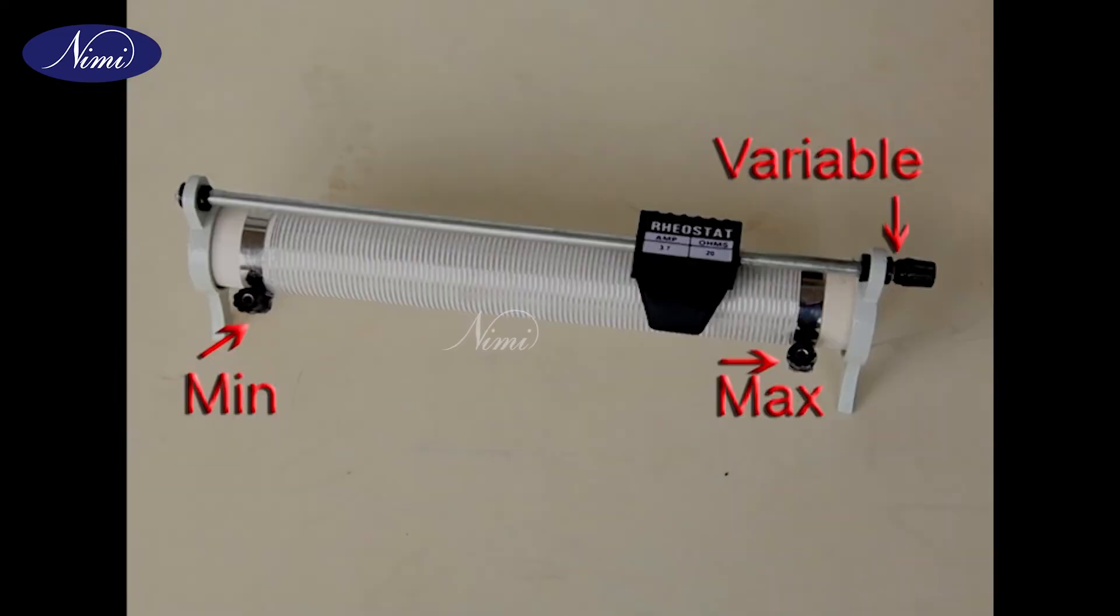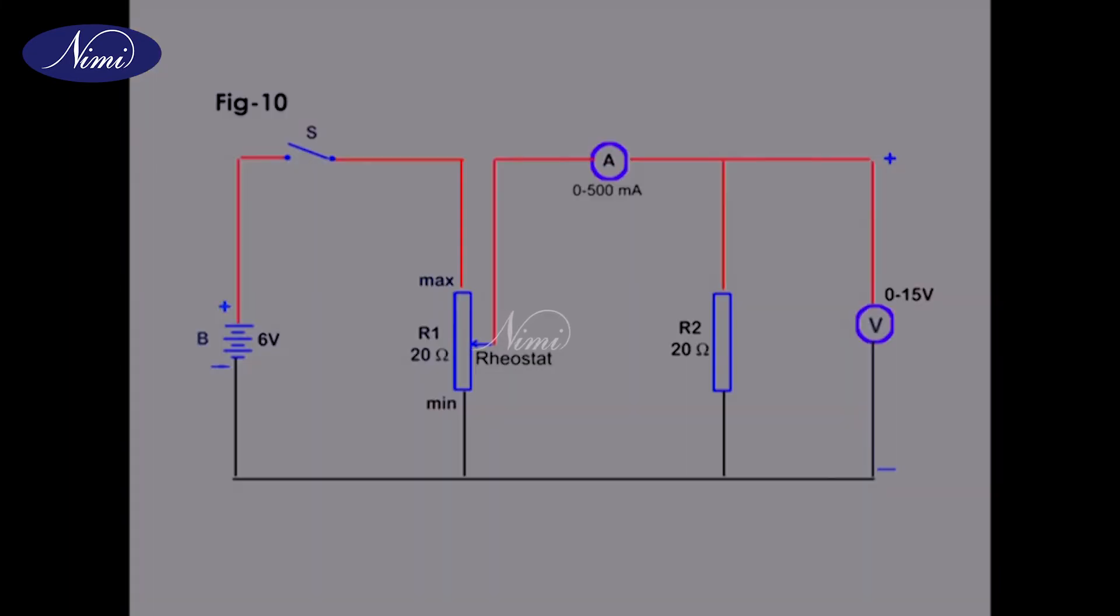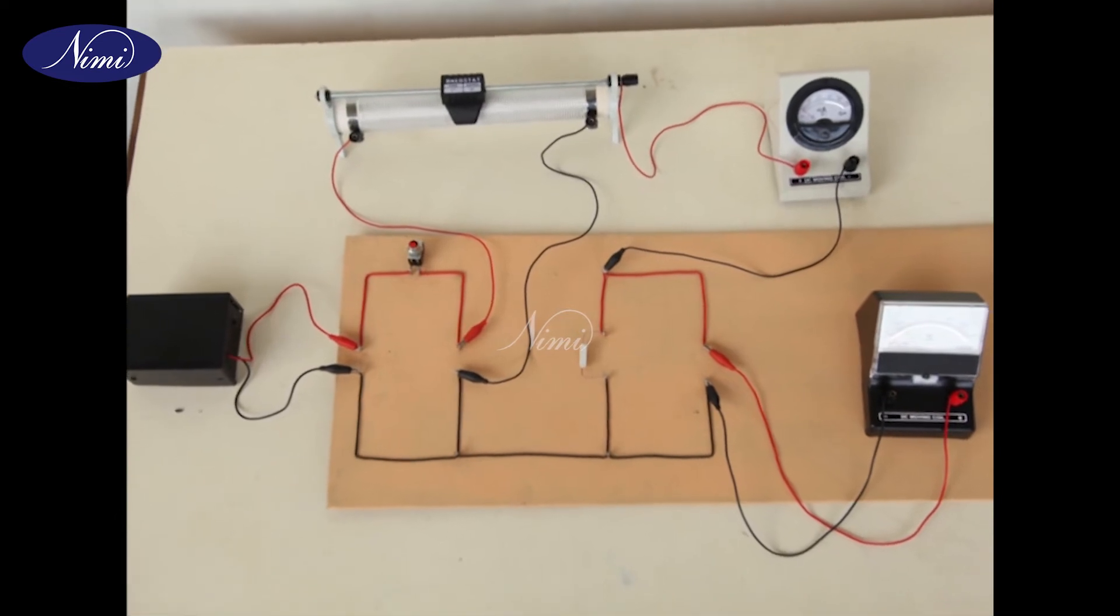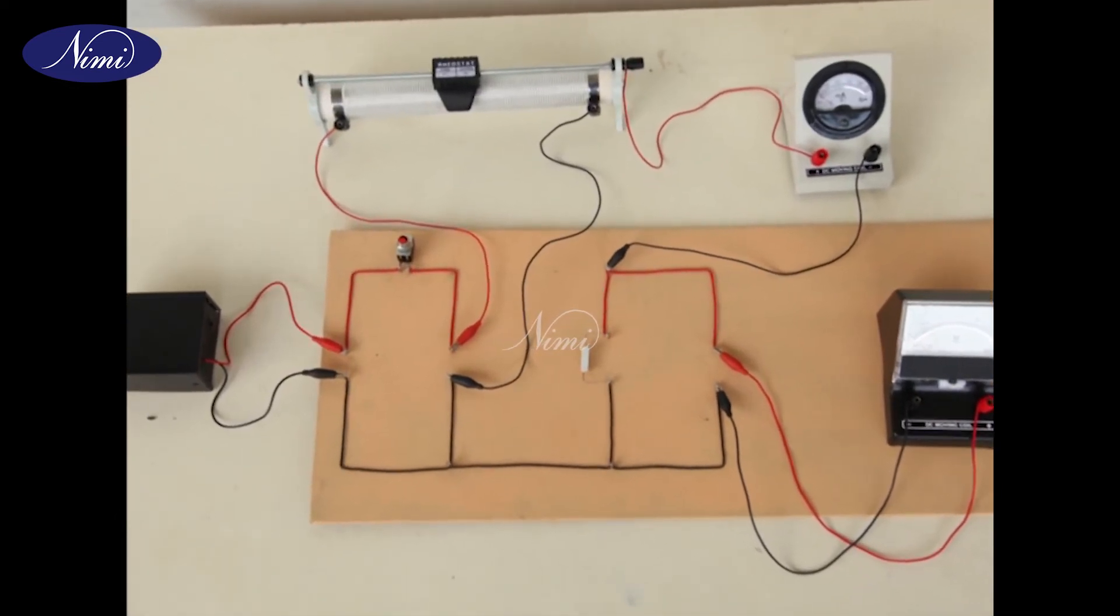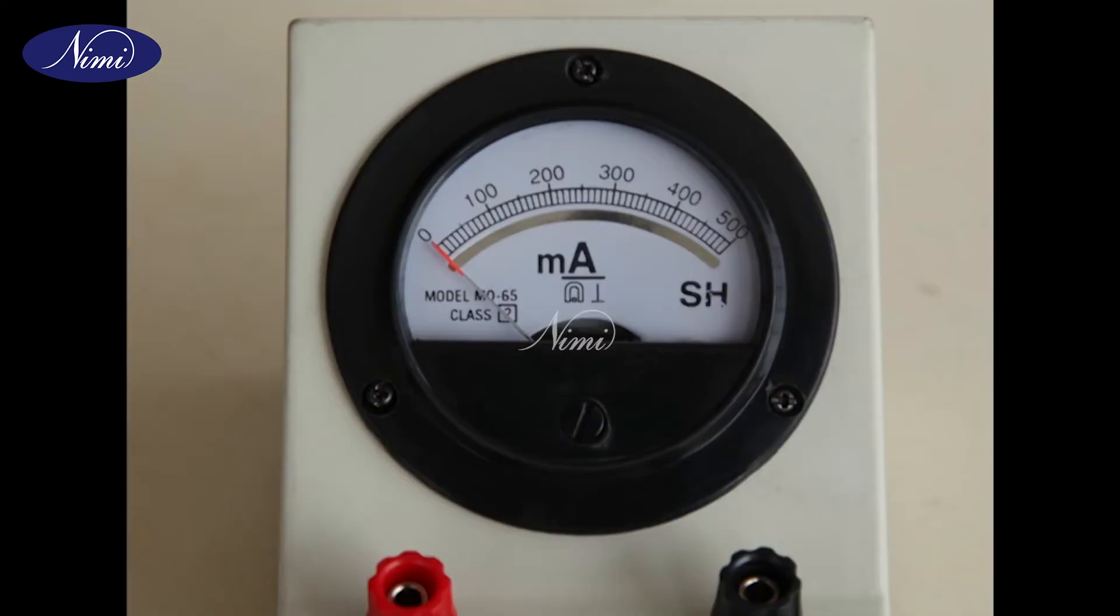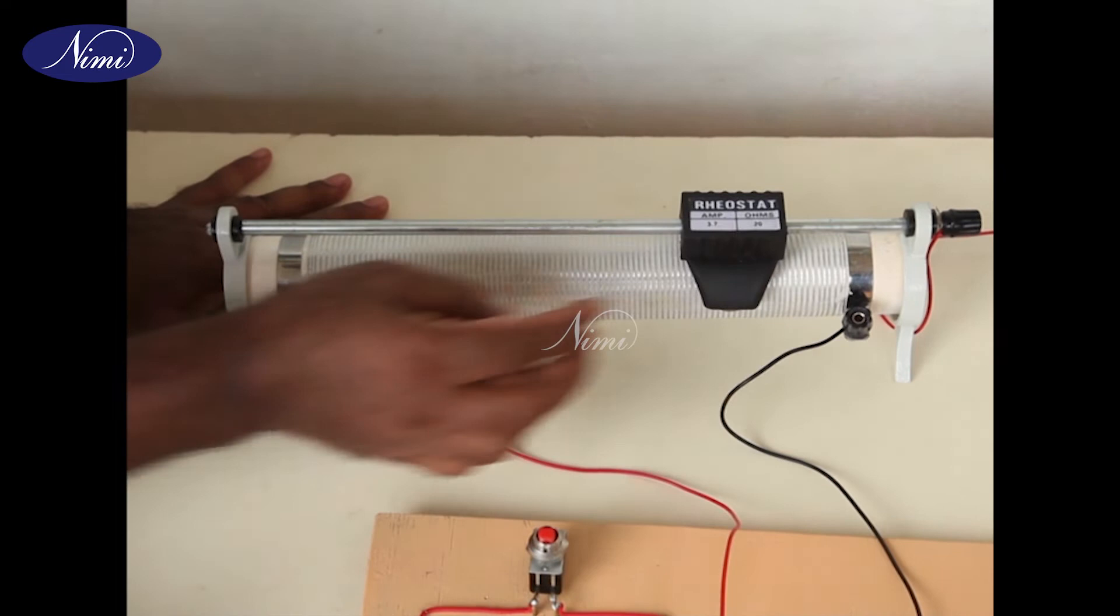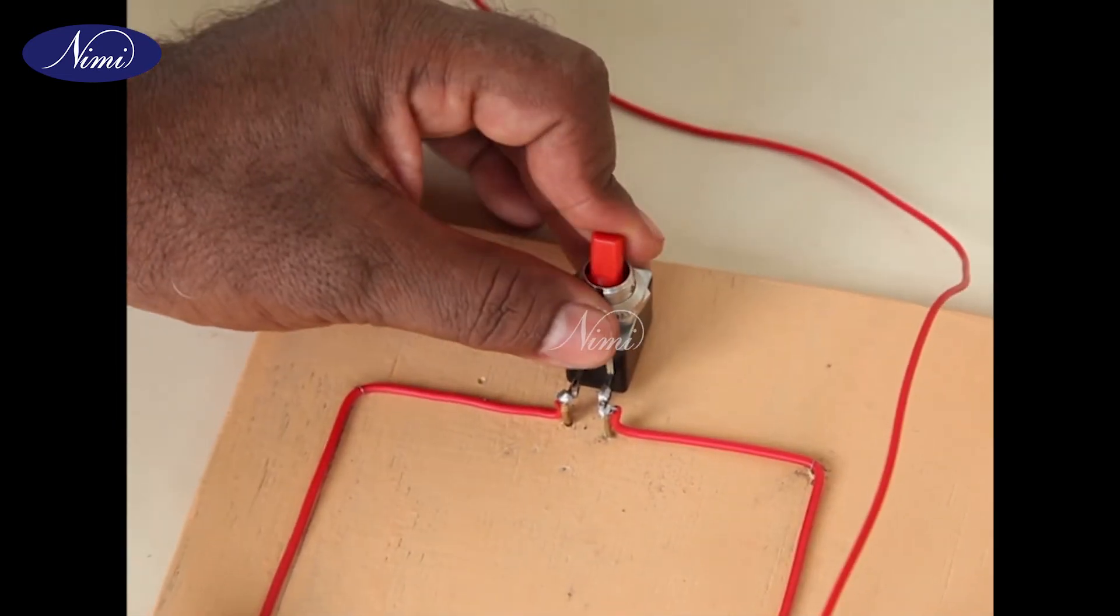Step 3: Identify the fixed and variable terminal of the rheostat. Step 4: Connect the circuit elements as shown in figure 10. Step 5: Ascertain the value of each major and minor division of the scales. Step 6: Close the switch keeping the potentiometer to the minimum value to output.